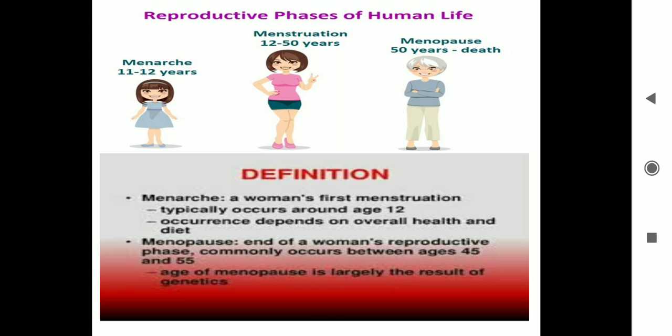The definitions are given here. Menarche is a woman's first menstruation, which typically occurs around the age of 12. Its occurrence completely depends on the overall health and diet of a person. Menopause, the end of a human's reproductive phase, commonly occurs between the ages of 45 to 55, and the age of menopause is largely the result of genetics.